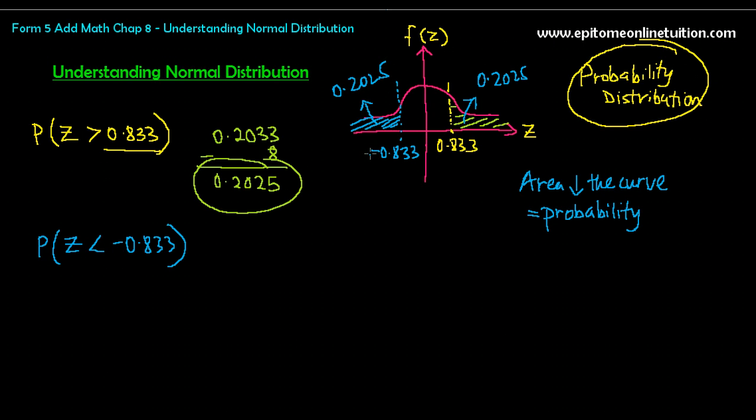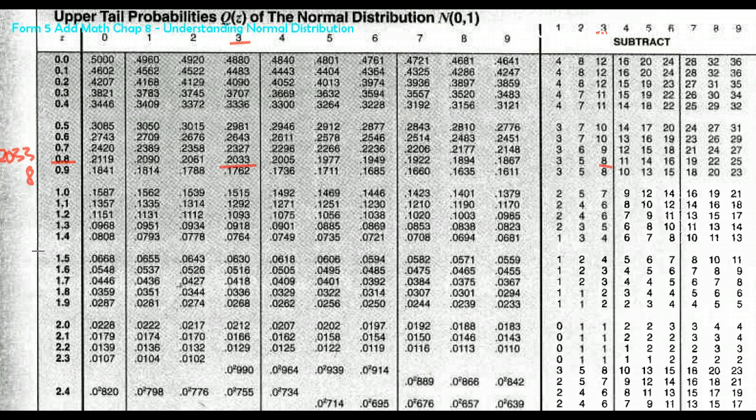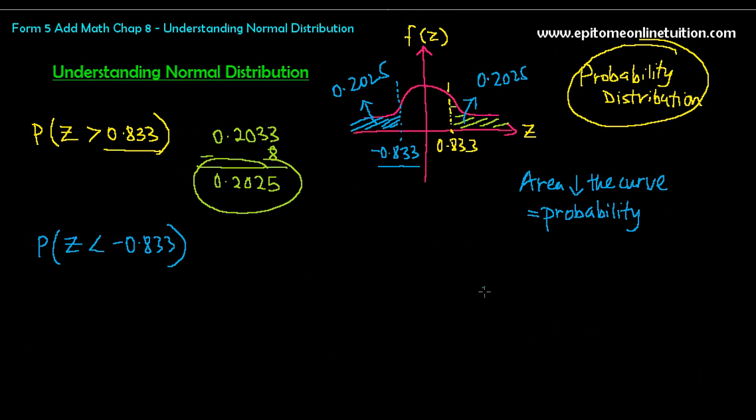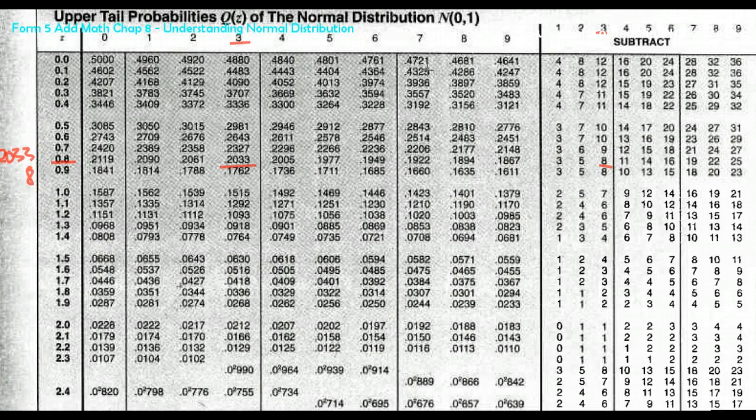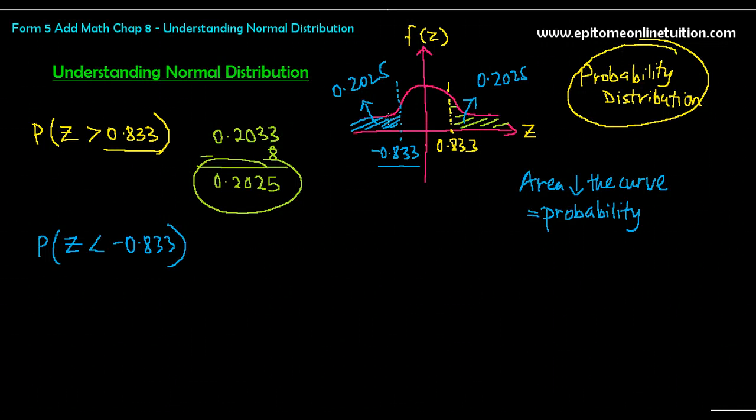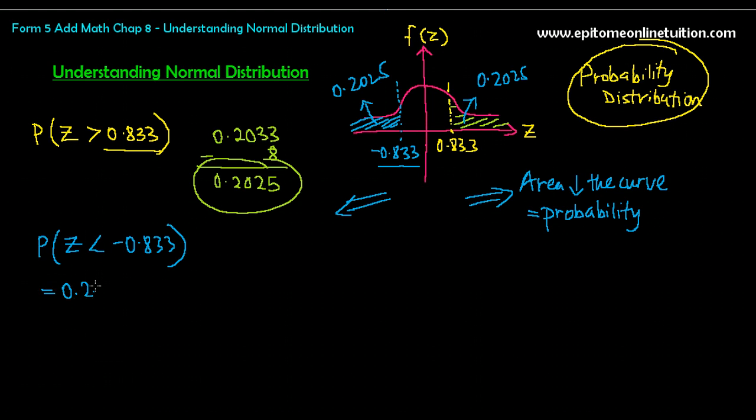So this is also 0.2025. That means if you see a negative, you read as usual from the table, you still read 0.833, because if you notice from the table, there is no negative on the Z-score. So you still read 0.833, but you have to understand that when you read from the table, the answer that you get represents the area shaded towards the outside of the curve. It is never inside of the curve, it's always towards the outside.